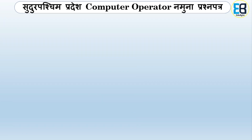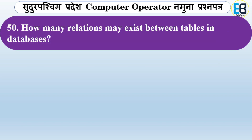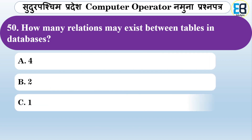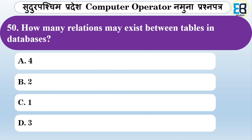How many relations may exist between tables in a database? Options are one, four, two, or three. The correct answer is three — three types of relations can exist between tables in a database.